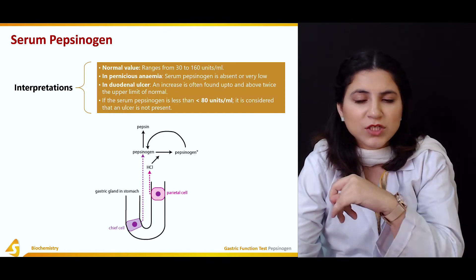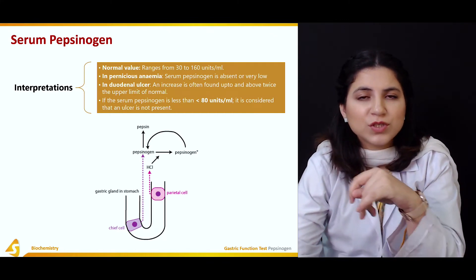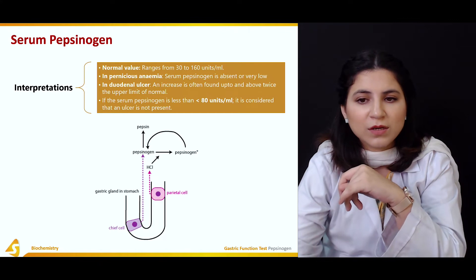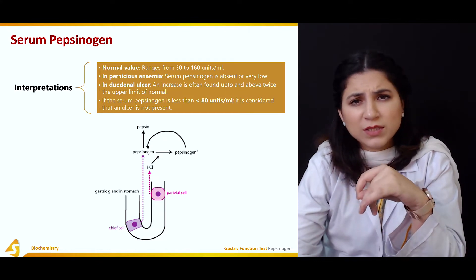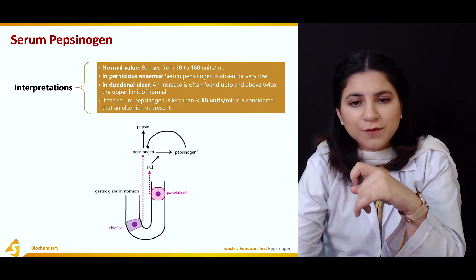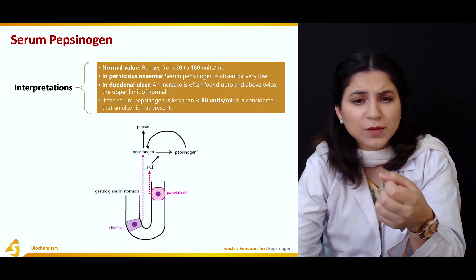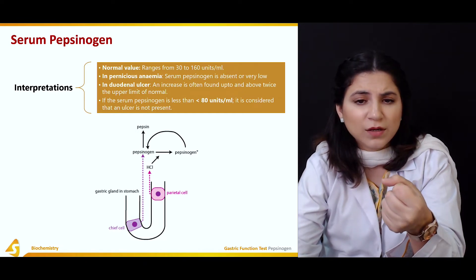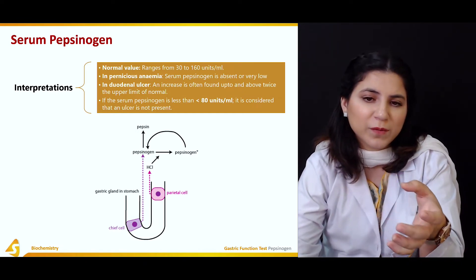In pernicious anemia, there is no serum pepsinogen present, or it is present in a very low quantity. This actually helps us indicate that a person may be suffering from pernicious anemia.